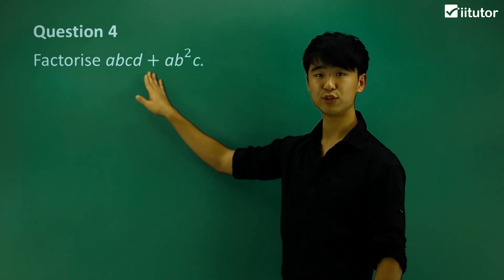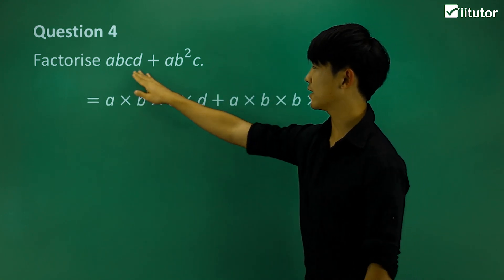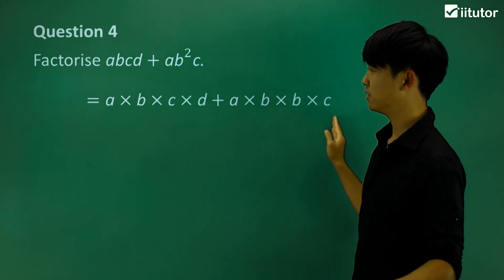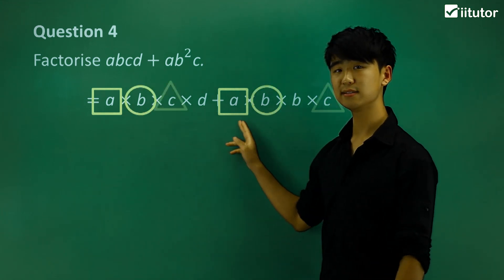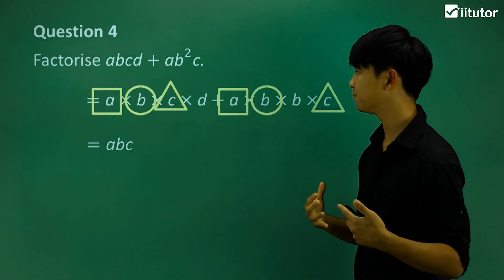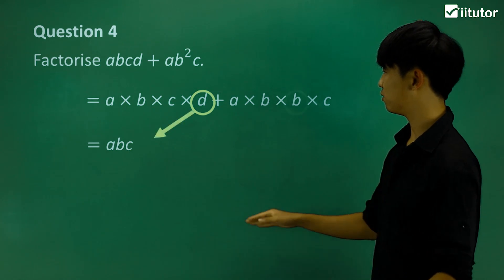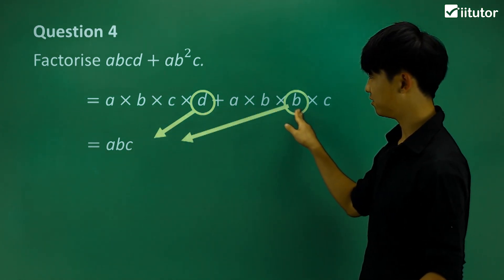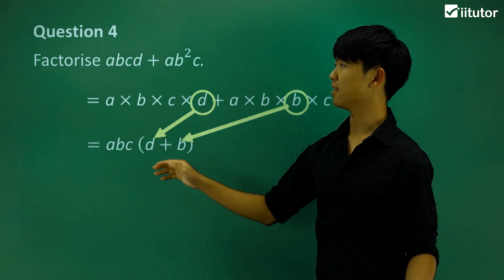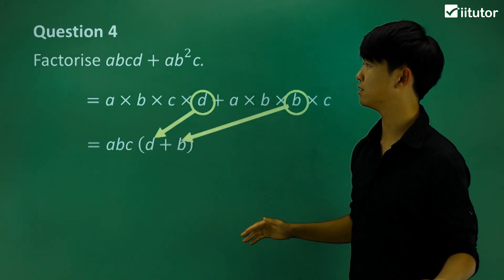Question 4: the terms are getting a little bigger, but we're still going to factorize what we can. Looking at the factors of each term — A times B times C and the other term — what are the common factors? They both have As, Bs, and Cs, so we're going to take out the greatest common factor ABC. What's left? D and B with a plus in the middle. So ABC bracket D plus B bracket. It looks complicated but we do the same thing and get a nice answer.